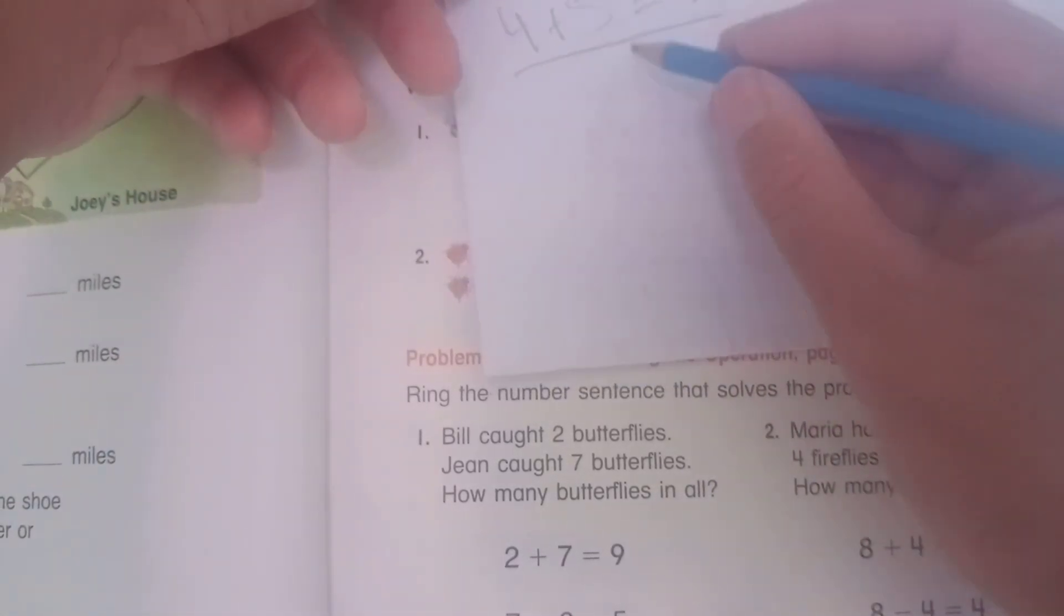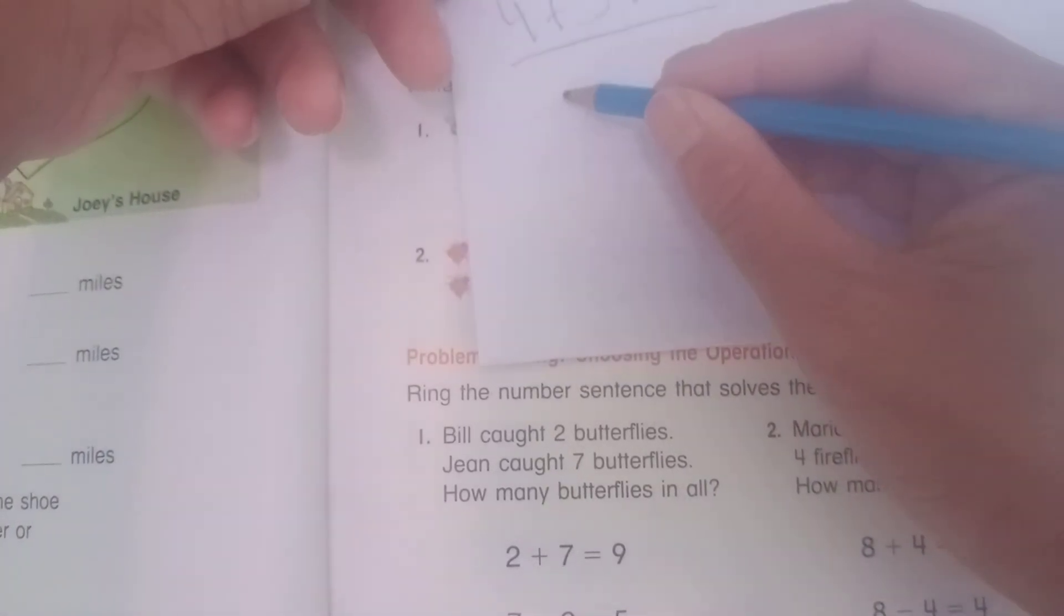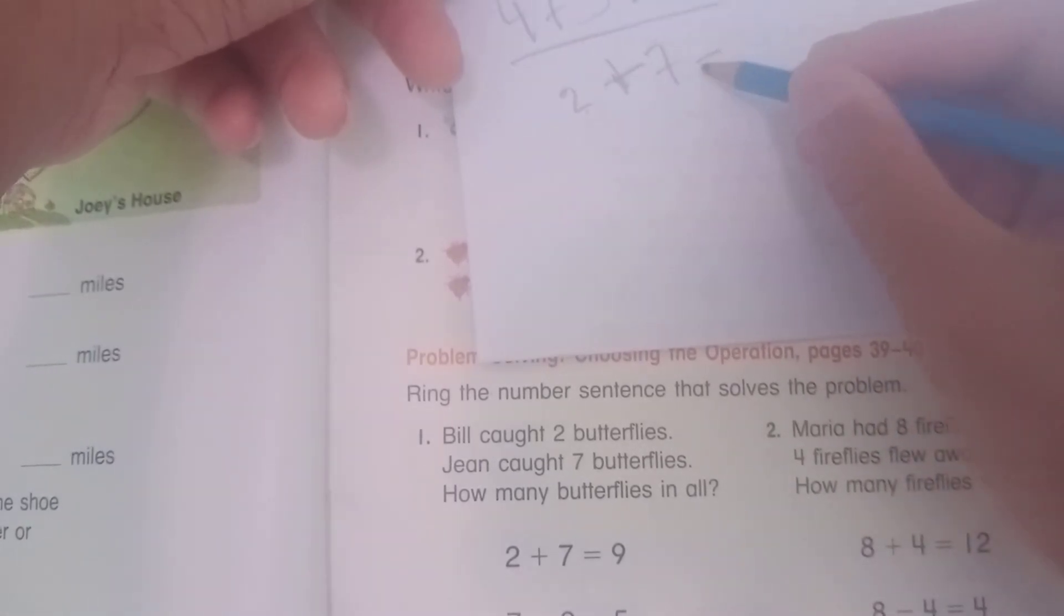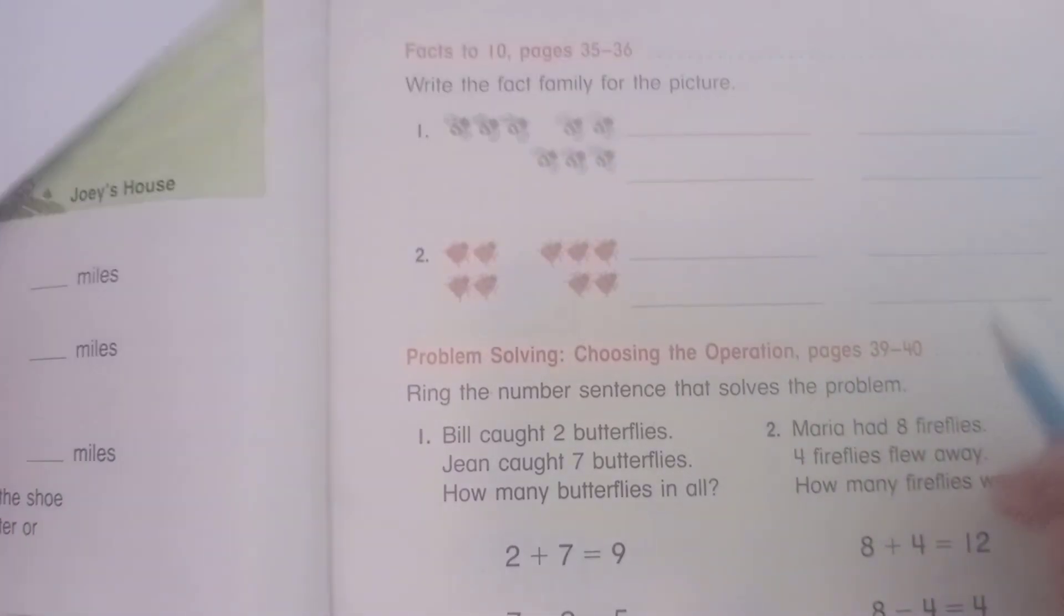Yes, so 2 butterflies plus 7 equals 9 butterflies, yes, in all. This, right? And so now number 2.